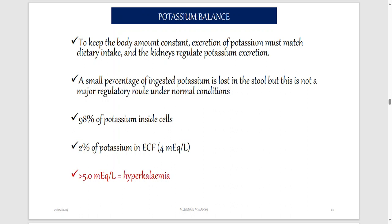Now let's talk about how ions are balanced in the body, starting with potassium. To keep the body's potassium amount constant, excretion of potassium must match dietary intake. The more potassium you take in, the more you excrete. The kidney regulates potassium excretion because it ensures excess substances are removed via urine. A small percentage of ingested potassium is lost in sweat, but that is not the major route for controlling potassium.